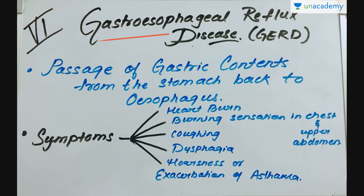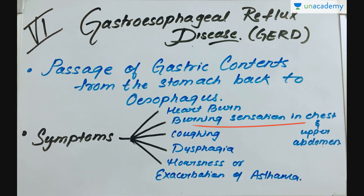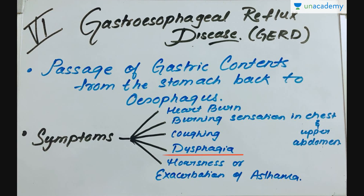Gastroesophageal reflux disease, or GERD, is a relatively common digestive disorder characterized by frequent passage of gastric contents from the stomach back to the esophagus. The most common symptoms include heartburn and a burning sensation in the chest and upper abdomen. Other symptoms may include coughing, dysphagia (difficulty in swallowing), hoarseness, or exacerbation of asthma.